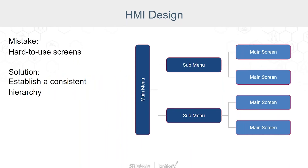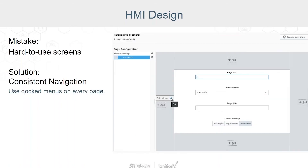Here's another tip for making screens easier to use: establish a consistent hierarchy within and between views. This starts with choosing a navigation strategy. Ignition allows you to display consistent docked menus on every screen, so your users know that no matter where they are in the system, they're always going to see the same menus. You can choose menus docked on the side, top, or bottom of the screen, and you can use any combination. By using the shared settings, the same menu will appear in the same position on every screen.